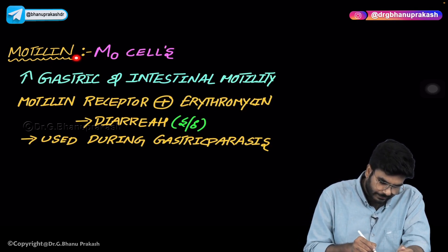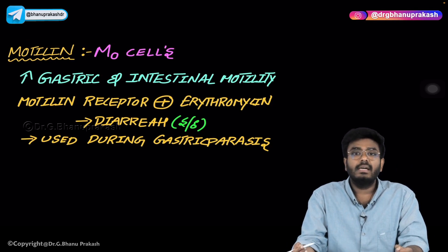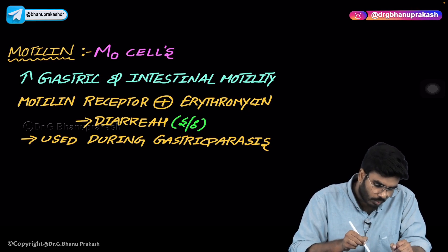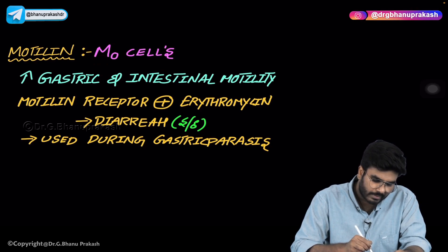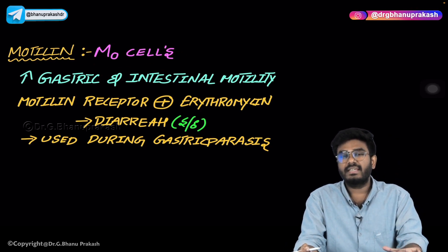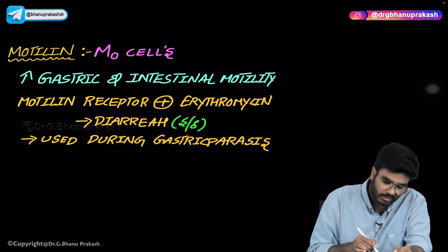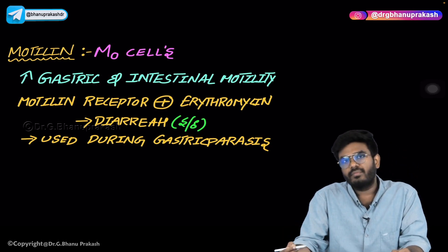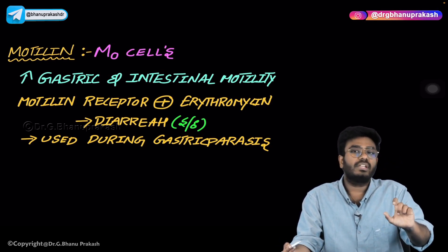Now let's discuss motilin. What is motilin, where is it produced, and how can we correlate this GI hormone with pharmacology? Motilin is produced from M0 cells. M0 cells produce motilin, and — as the name suggests — motilin increases gastric and intestinal motility. So motilin from M0 cells increases GI motility.